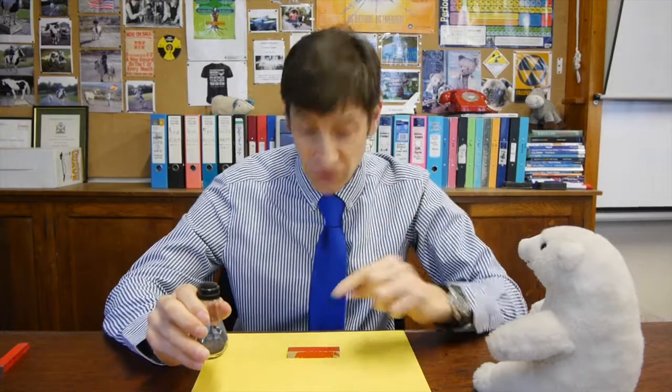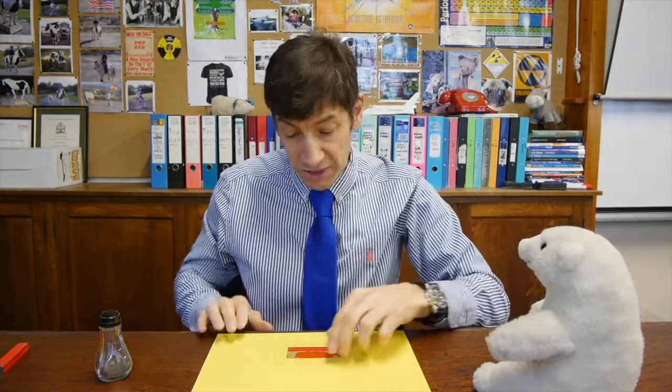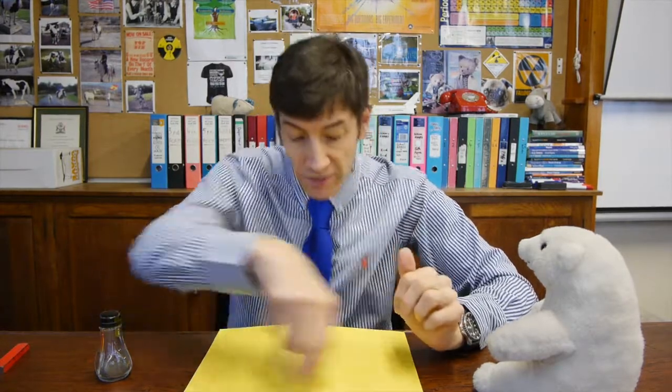The only problem is, if you do that straight towards the magnet, they'll all just stick onto the magnet. So what we're going to do, because magnetism can go through paper, is hide the magnet underneath and sprinkle the iron filings on top. And if they move to produce a pattern, we know there's a magnetic field around this magnet.